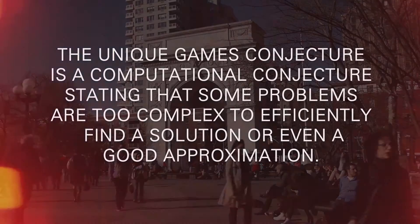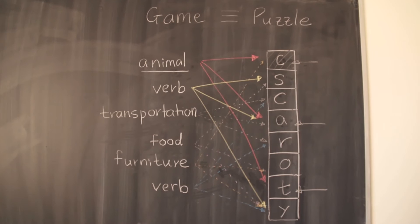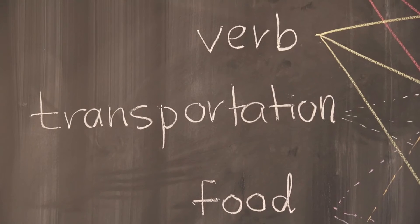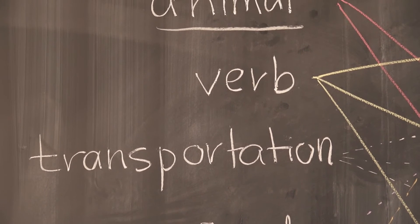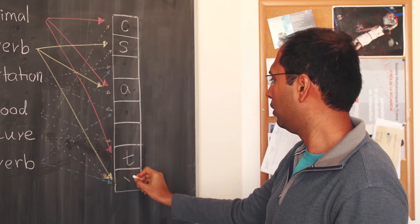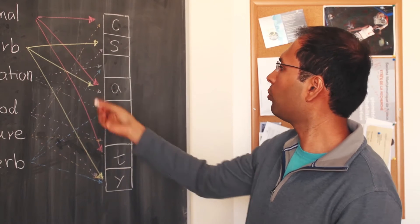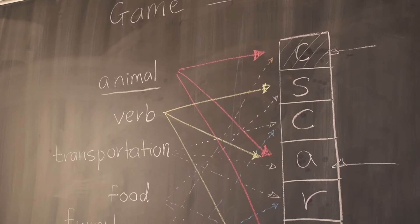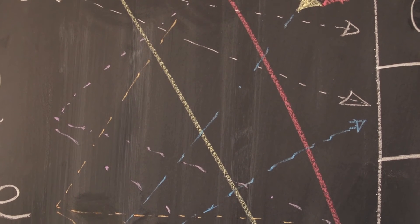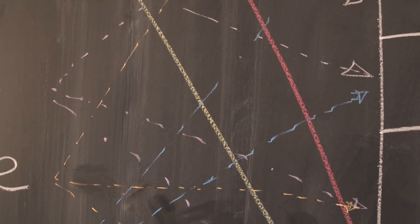I will describe the kind of games that I like to play by giving a toy example. This is really a puzzle constructed by my collaborator Dana Moskovis. On the left hand side, you have categories such as animals, verbs, transportation and so on. And on the right hand side, you have a column of boxes and you want to fill up these boxes with letters. You have to pick these words for different categories on the left hand side so that they are consistent with the letters that you put on the right hand side. So it's a puzzle. Puzzles of this kind, if they are very large in size, computers cannot solve these puzzles fast or efficiently.